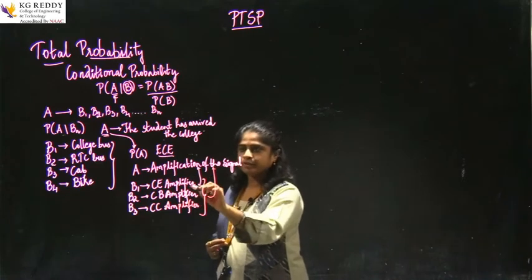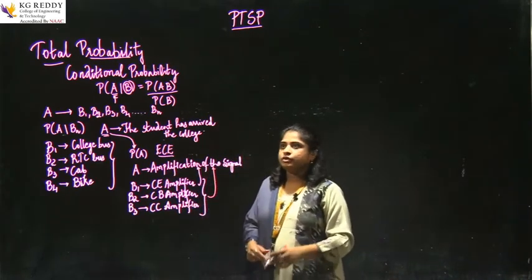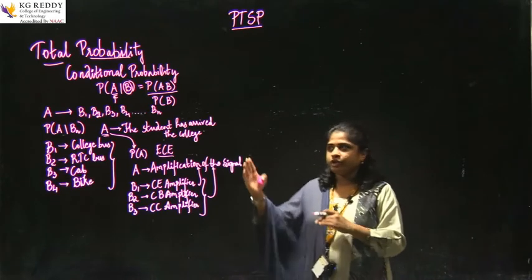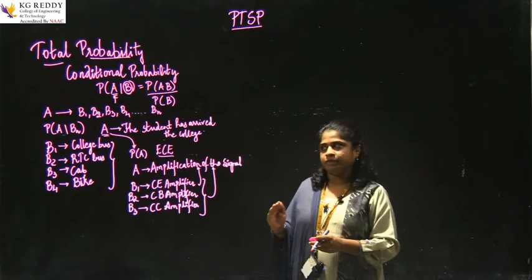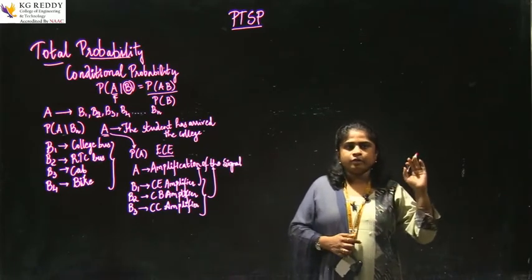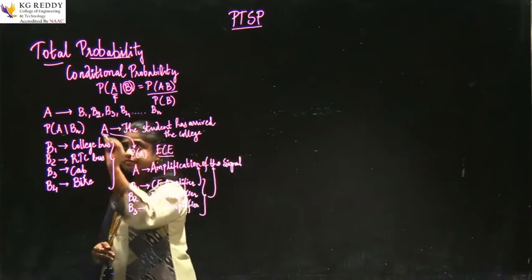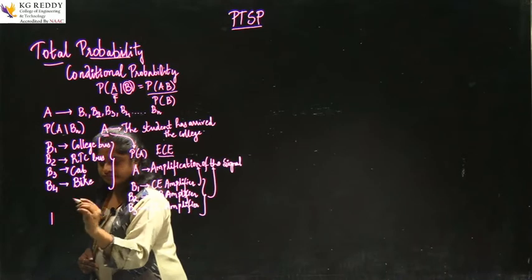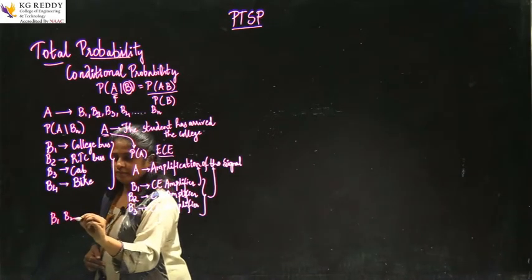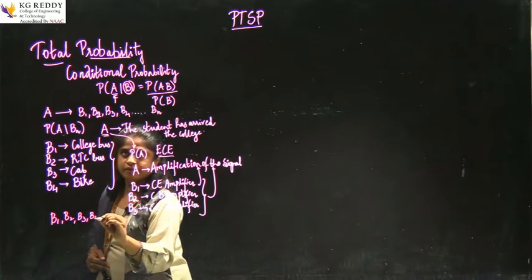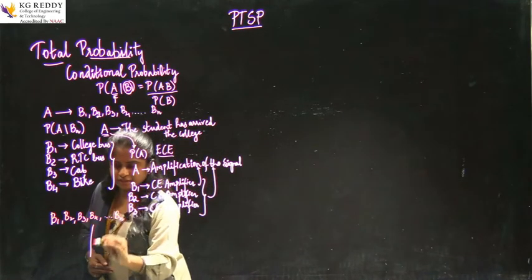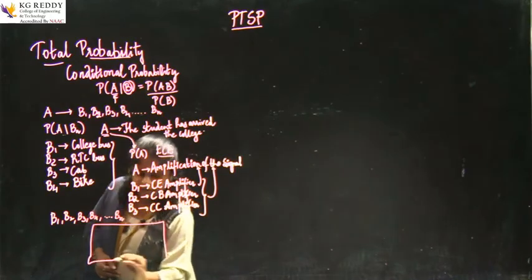After the occurrences of B1, B2, B3, then only A will be occurring. So I will be deriving the complete equation for the total probability of A. We now know the importance of total probability. I am taking B1, B2, B3, B4 up to BN on a sample space, and these are all mutually exclusive events.